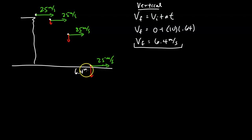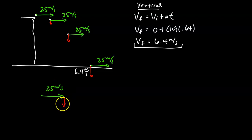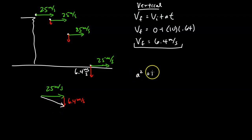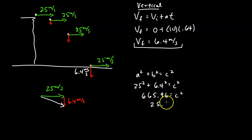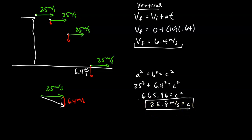Using the tip-to-tail method, I draw the 25 meters per second horizontal vector and the 6.4 meters per second vertical vector, then find the resultant. Applying the Pythagorean theorem: 25 squared plus 6.4 squared equals c squared. That gives 625 plus 40.96 equals 665.96, so c equals the square root of 665.96, which is approximately 25.8 meters per second. That is the final speed right before the arrow hits the ground.